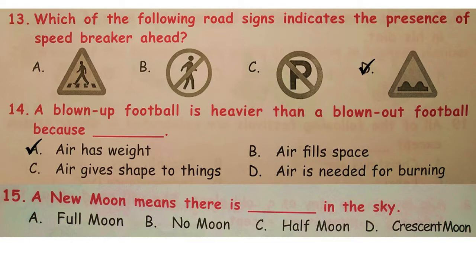Question number 15: a new moon means there is dash in the sky. Answer is option B. Sometimes the moon disappears completely and hence there is no moon in the sky. This is known as new moon.